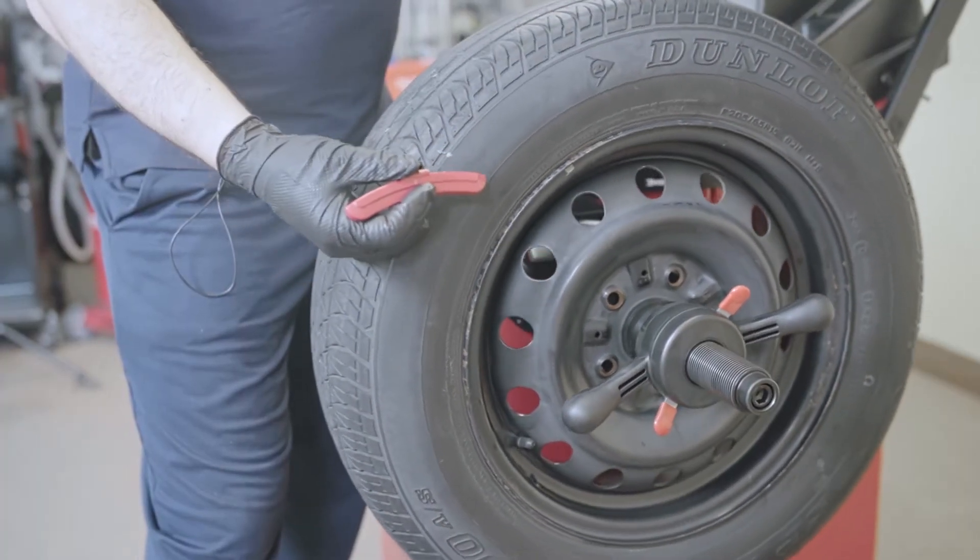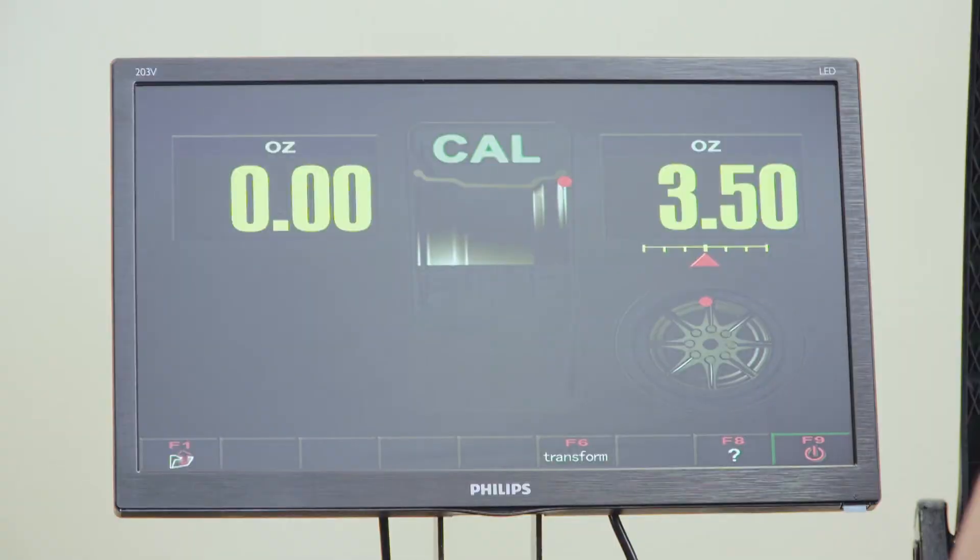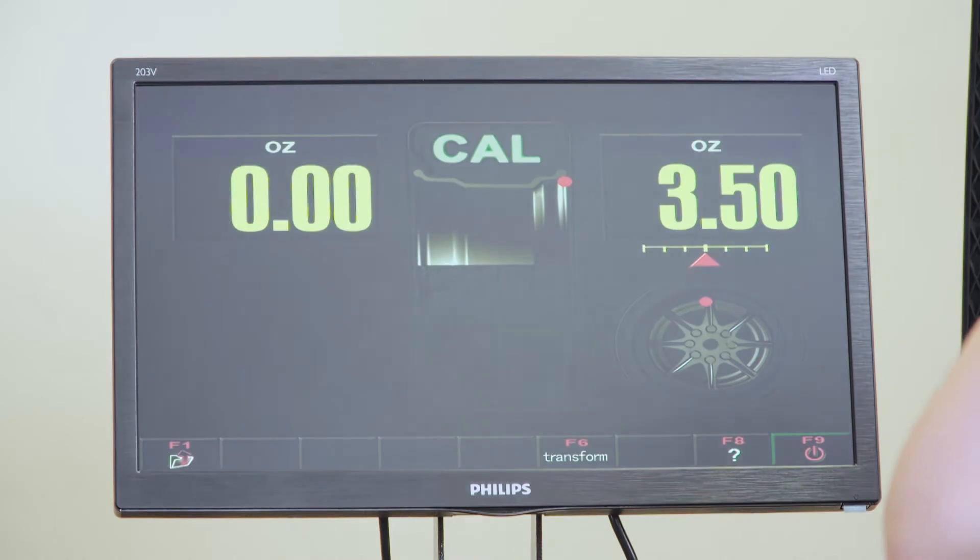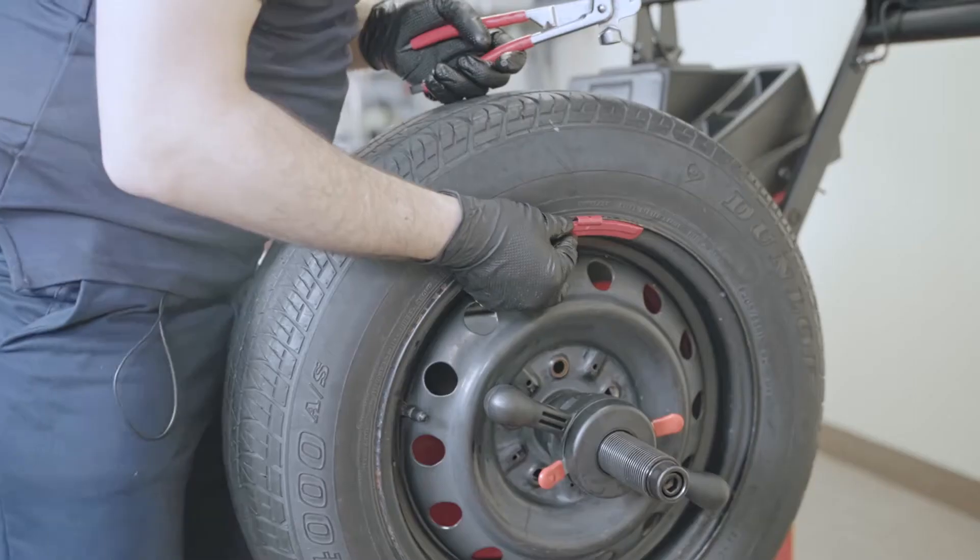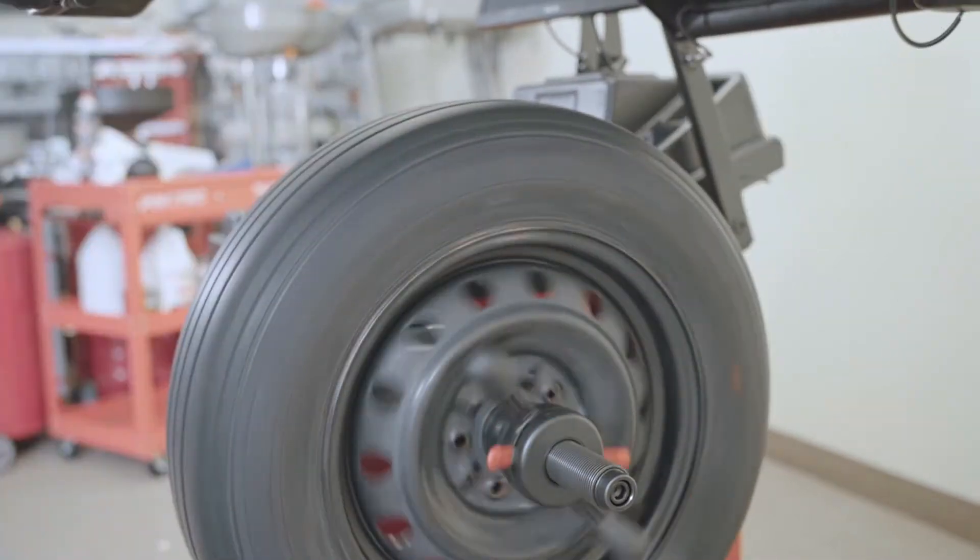Now we're going to take the 3.5 ounces or 100 gram weight. We got to make sure you bring this red arrow in the center. Then install the weight at 12 o'clock. Close the hood.